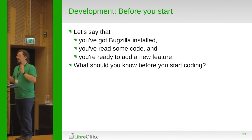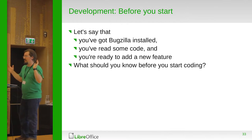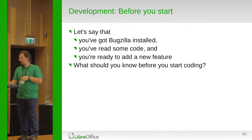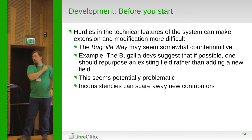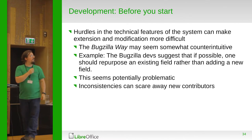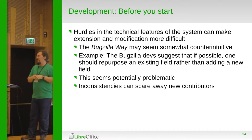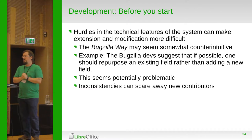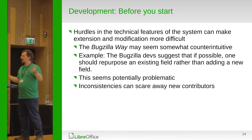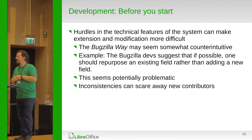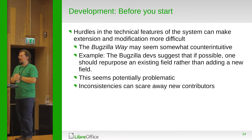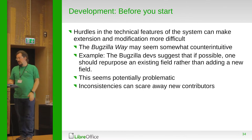Let's say you've got Bugzilla installed, you've read some code, and you want to add a feature — what should you know? Reading through the Bugzilla documentation is helpful, as is talking to the Bugzilla mailing list. One interesting nuance: Bugzilla prefers you to modify existing pieces rather than adding new ones — for example, repurposing an existing field rather than adding a fresh one. This might seem a little novel and could scare away some new contributors.